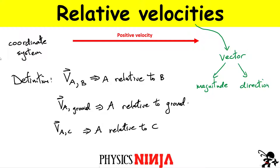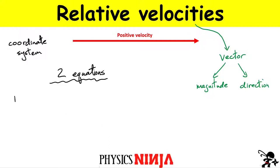We have two equations to calculate relative velocities. Equation 1: the velocity of object A relative to B equals minus the velocity of B relative to A. If you simply swap the two objects, you introduce a negative sign. These vectors have the same magnitude but opposite directions. Sometimes there are three objects linked together, as we'll see in the moving walkway example.